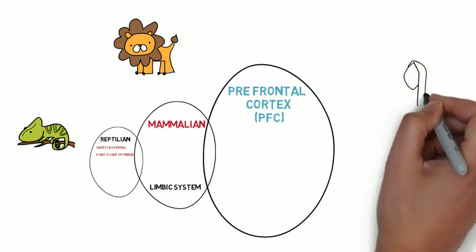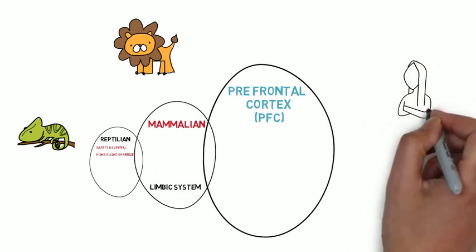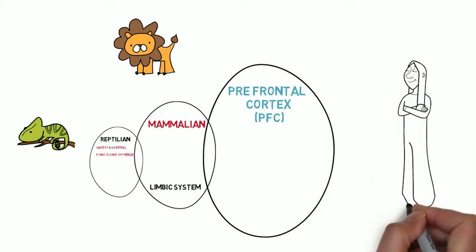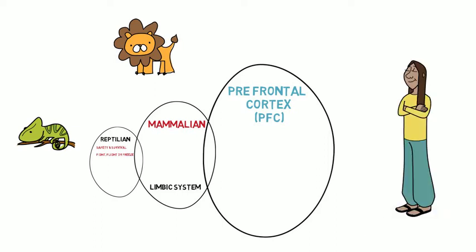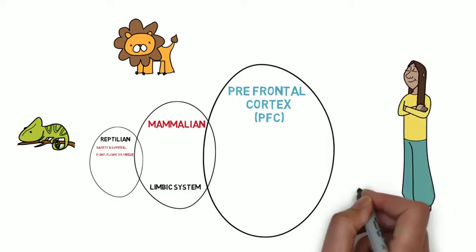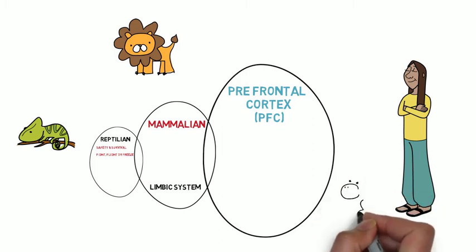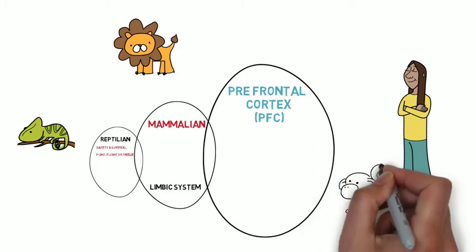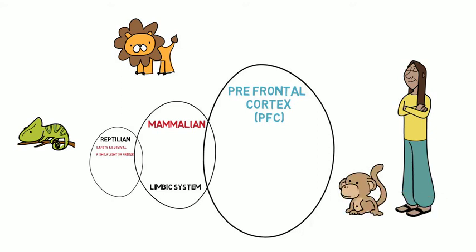And then we've got this beautiful thing called the prefrontal cortex. Now, there's only a couple of animals on the planet that have the prefrontal cortex. That is us. Dolphins have a prefrontal cortex. They're really interesting beings. And then some chimpanzees have a larger prefrontal cortex than others, and we can see the association there.